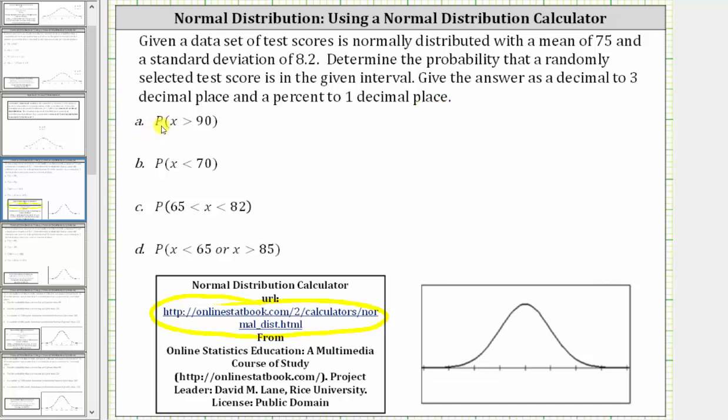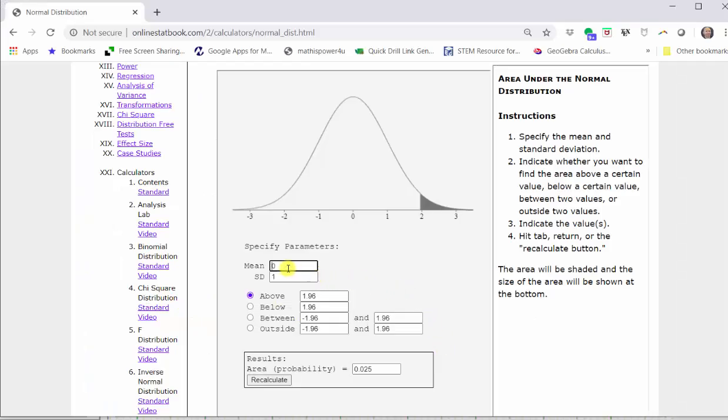Part A: find the probability that X, the test score, is greater than 90. Going to the calculator, we first enter the mean and standard deviation. The mean is 75.